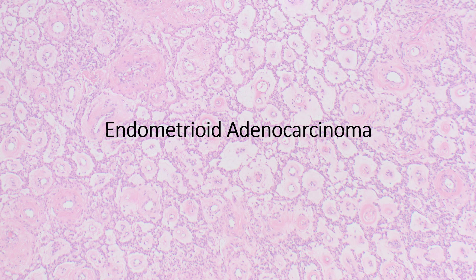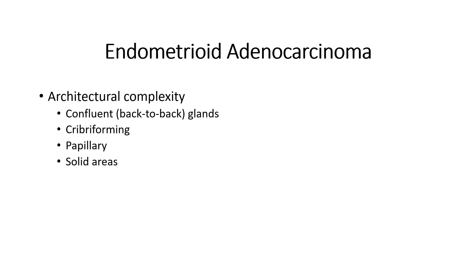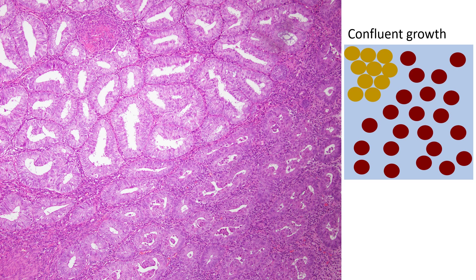Moving on now to endometrioid adenocarcinoma. The distinction between carcinoma and EIN or atypical hyperplasia is really all about architecture. With carcinoma, you're going to have confluent or back-to-back glands without any stroma in between — really getting crowded one step above what you'd see in EIN. You can also see complex architecture in the way of cribriforming, papillary areas, or solid areas. Here we have an example of endometrioid adenocarcinoma arising in a background of EIN, with areas where glands are growing together with little to no intervening stroma and some cribriform spaces beginning to form.